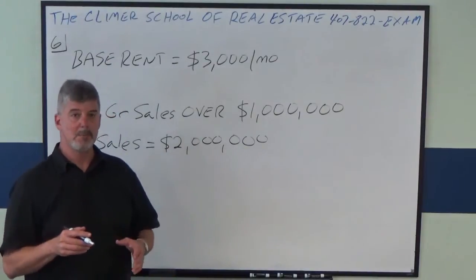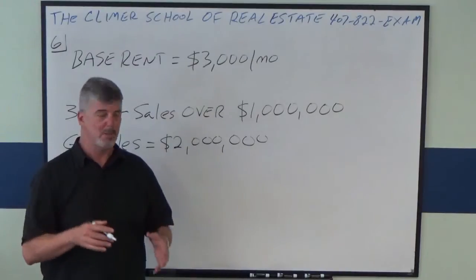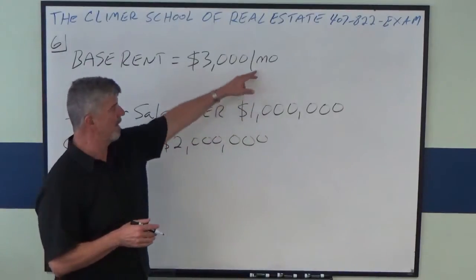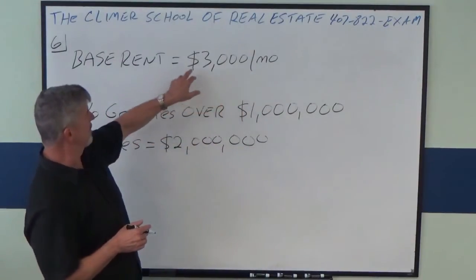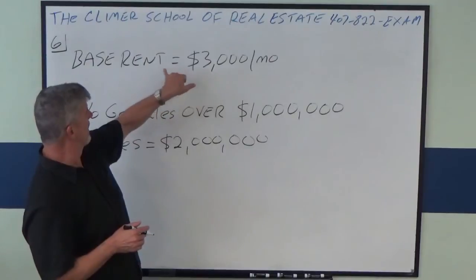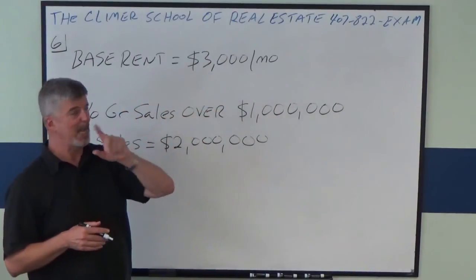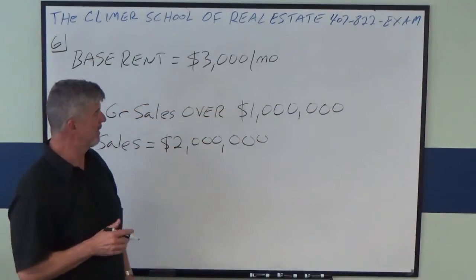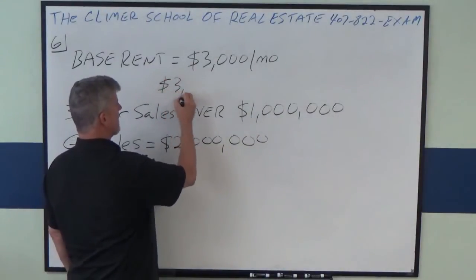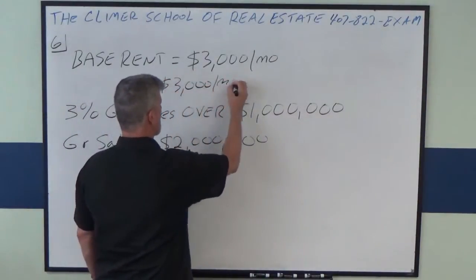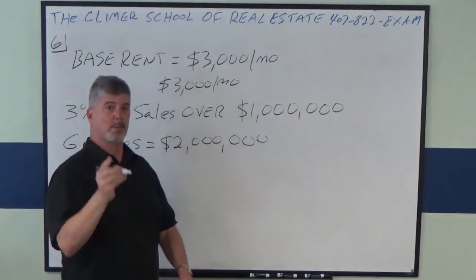The first thing you've got to do — let me remind you — you've got to get your units the same. Units. We have month and we have annual, so we have to turn our monthly rent into an annual rent. So $3,000 per month times 12 months.